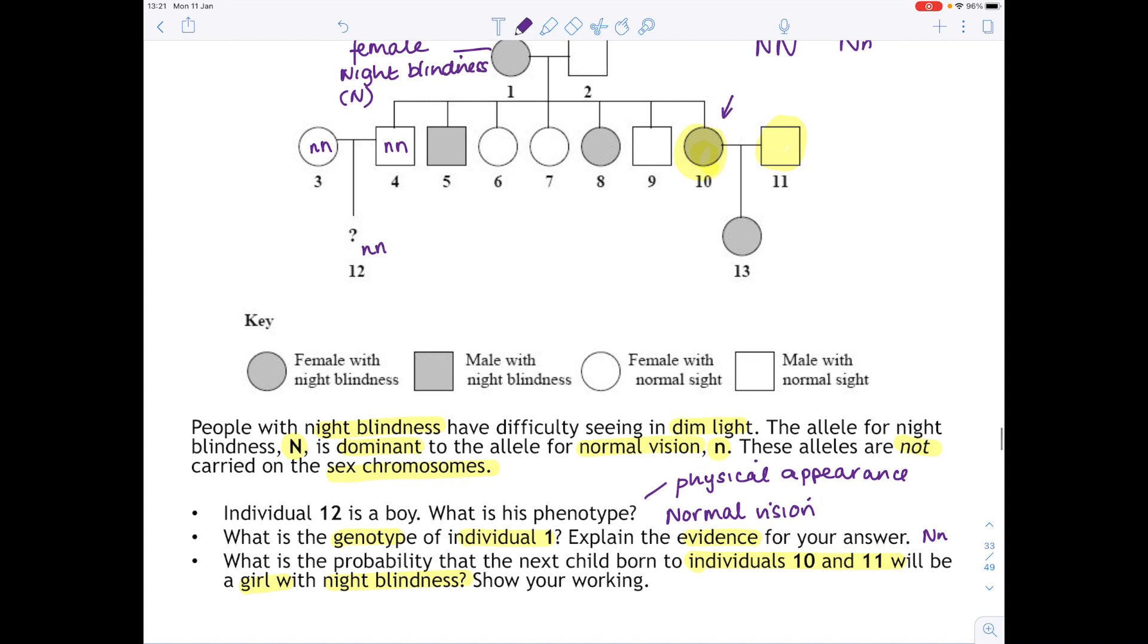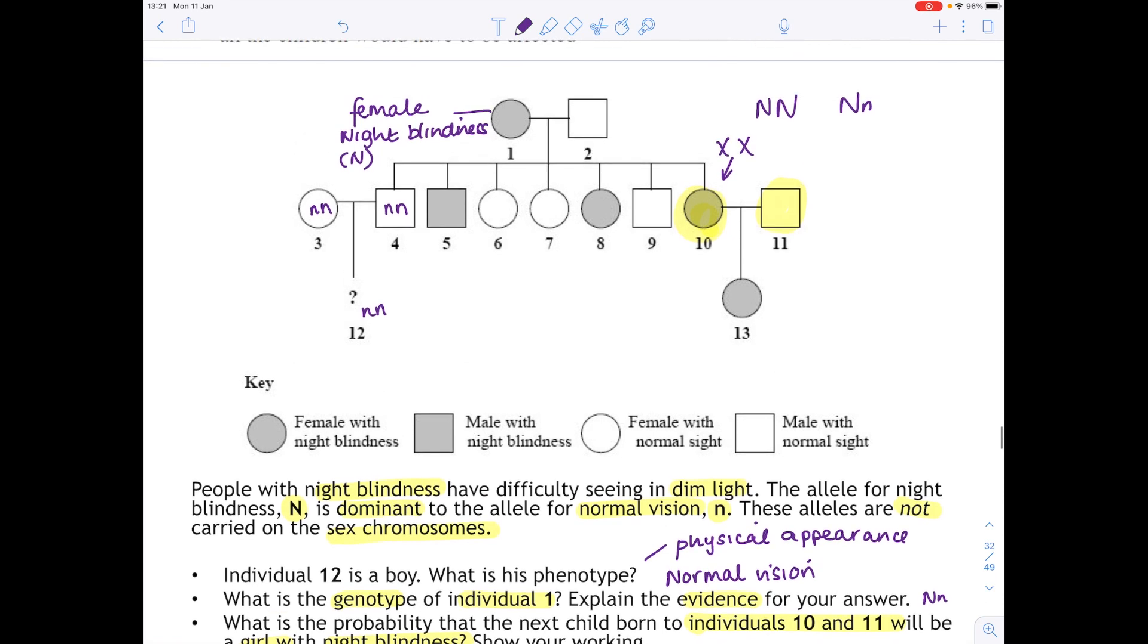Because we're looking at individual 10 which is a female, we know that they have two X chromosomes. In terms of referring to the night blindness aspect, we know that they're heterozygous because the father can't have passed on a dominant allele because otherwise they would have night blindness too. Looking at the male individual now, their sex chromosomes are XY. We know that they're unaffected so therefore they must be homozygous recessive. So now we can do a Punnett square.